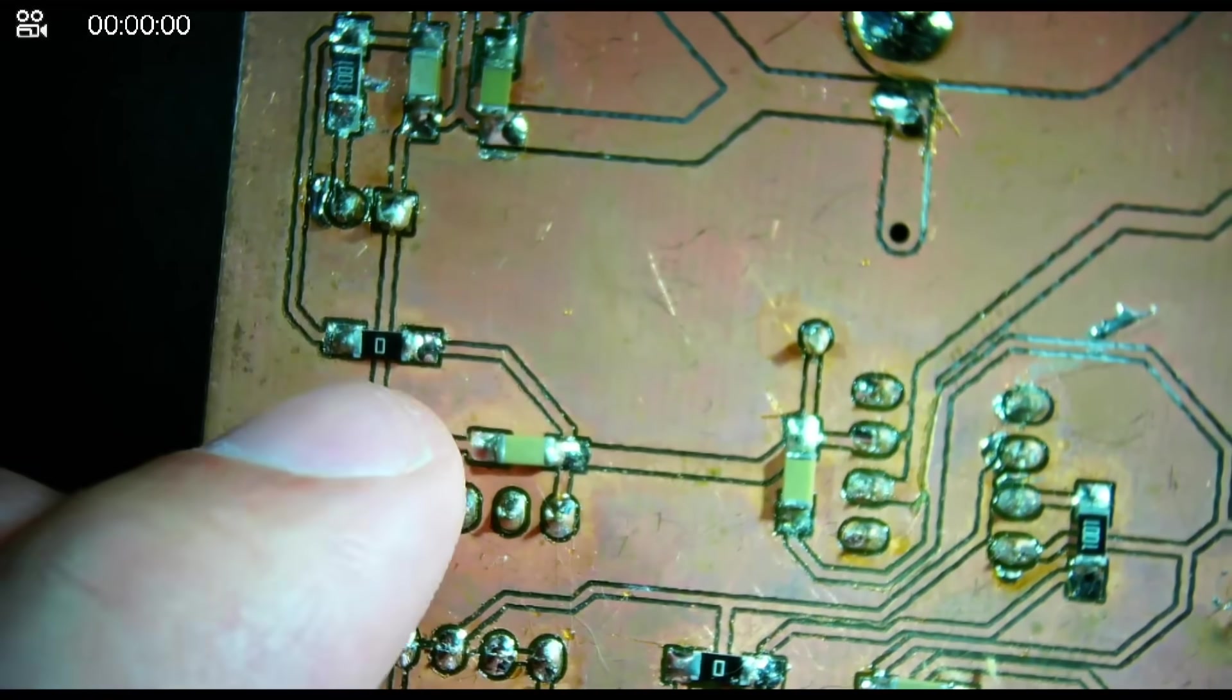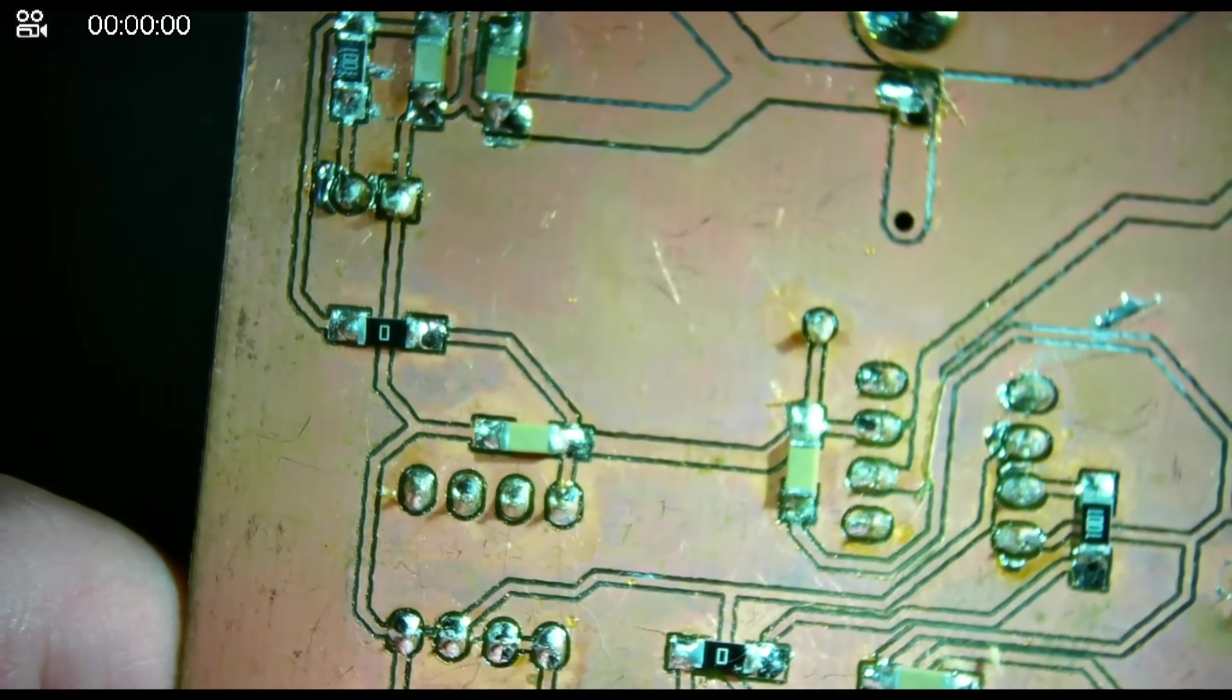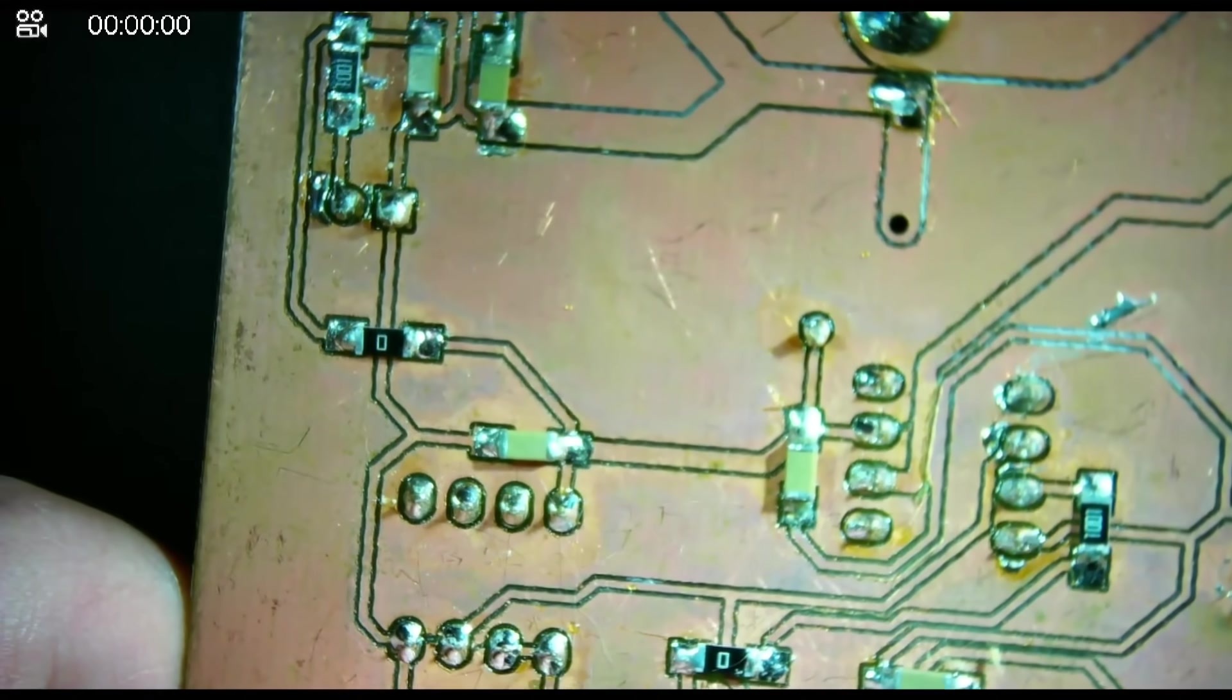And so I had, just as I described, I had a trace coming this way and I needed another trace that was going that way. And the zero ohm resistor was a really nice compact way for me to make that bridge.